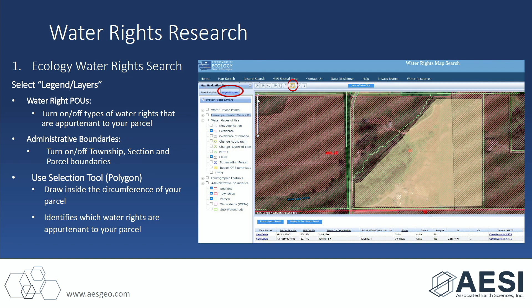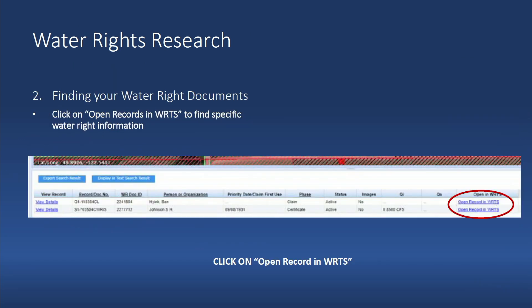Now Ecology has found one claim and one certificate. Now that we know what's truly on your parcel — and you'll want to do this for each parcel, as each parcel may have many water rights — in the bottom right-hand corner there's 'open record in WRTS,' and that's Ecology's information page.